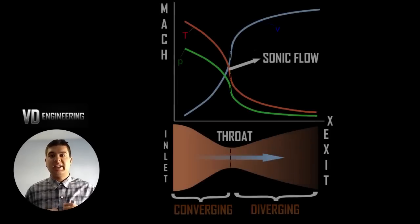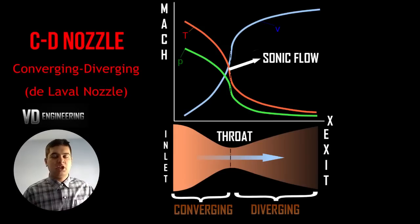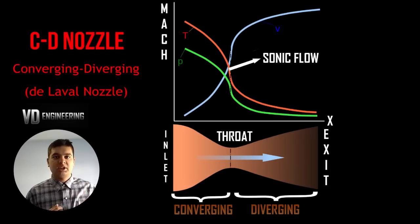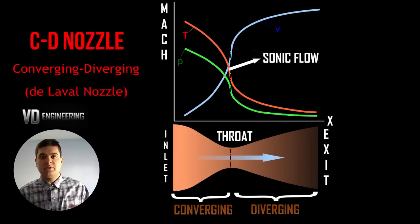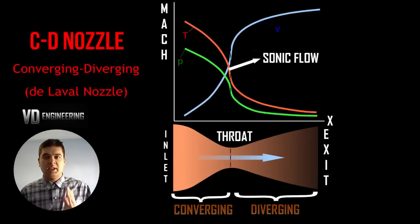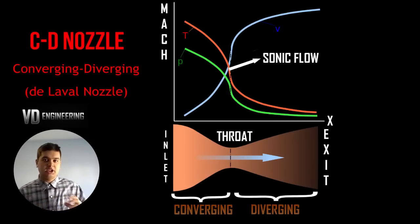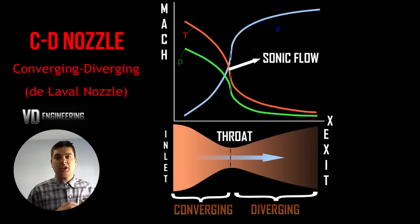A rocket engine nozzle is shaped like a CD nozzle, which stands for converging-diverging nozzle. The fluid in the chamber before the nozzle — your fuel and oxidizer — will be at rest. You first have to accelerate the flow to sonic speed, which occurs at the nozzle throat. The converging section accelerates the fluid to sonic flow, and the moment it hits the throat it becomes sonic. The diverging section, or expansion area, further accelerates the fluid well beyond the speed of sound. That is why the nozzle is in this configuration — to create supersonic flow at the exit.